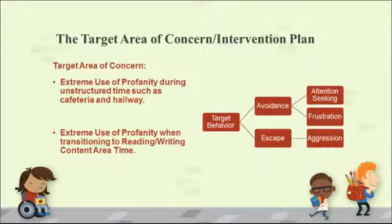Target area of concern and intervention plan. The target area of concern was extreme use of profanity during unstructured time such as cafeteria and hallway, and extreme use of profanity when transitioning to reading and writing content area time. Armande seemed to use this target behavior in order to avoid and escape work, also to seek attention from peers, teachers, and others. When he did not get that attention, whether negative or positive, he became frustrated and sometimes aggressive.